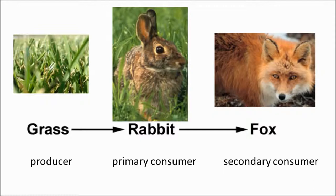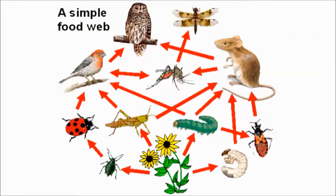Now what happens if you get lots of food chains and you put them together? You get a food web. This is a far more useful diagram because you can see the effect of a change on the entire ecosystem.